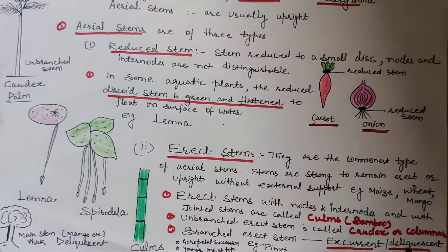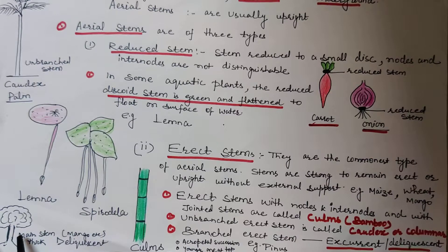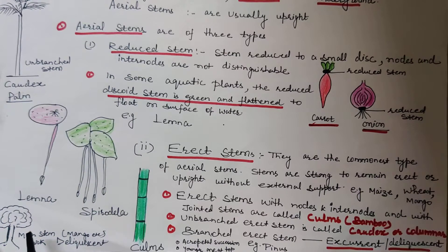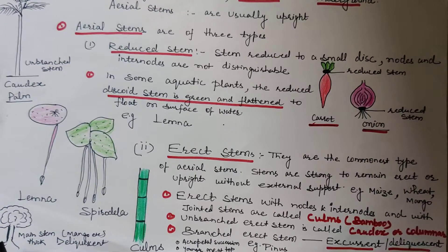The fourth category under erect stem is deliquescent. In deliquescent stem, the apical bud of the main stem is weak compared to the buds of lateral branches. The main trunk grows up to a certain height, after which the lateral branches become prominent and spreading, dominating by giving branches of several orders. The whole tree looks dome-shaped. Example is the banyan tree, Ficus bengalensis.